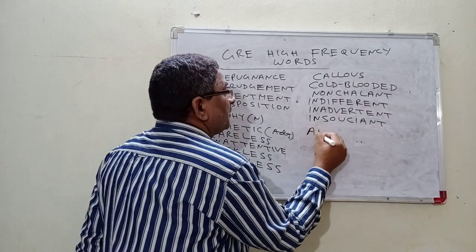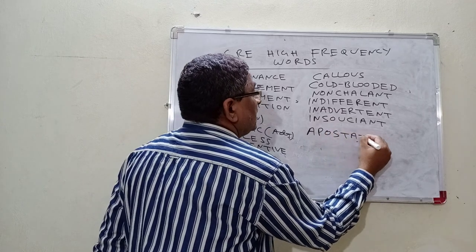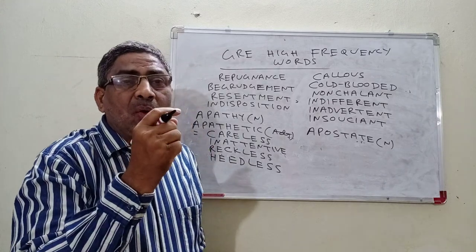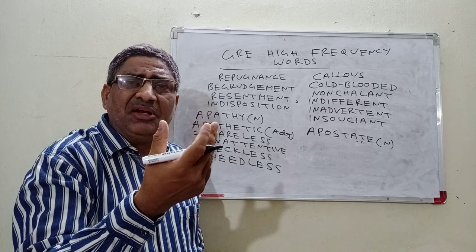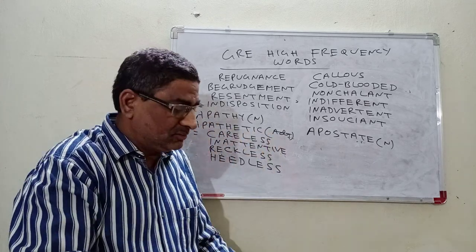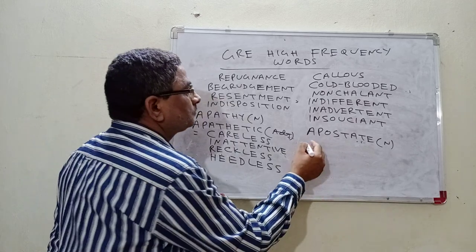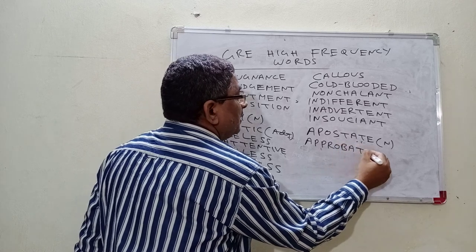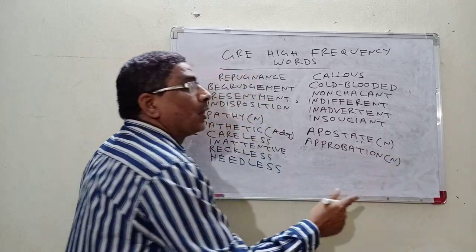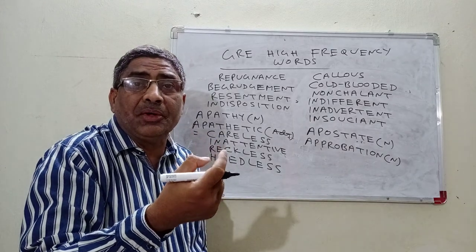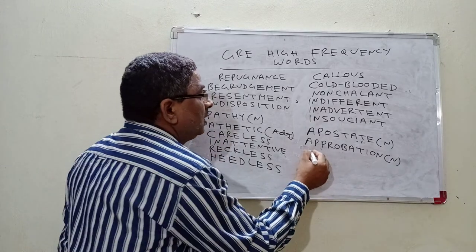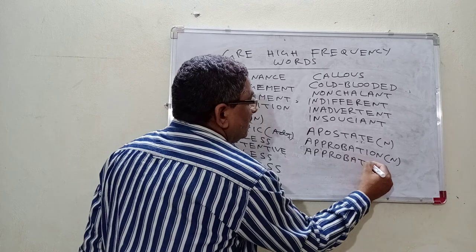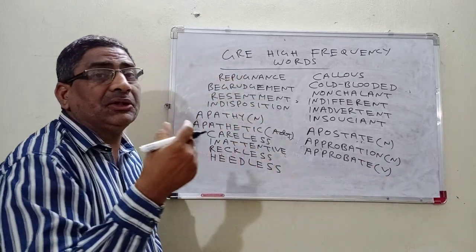Next word: Apostate — this is a noun form. What is the meaning of apostate? One who leaves all his religious and political beliefs — that kind of person is called an apostate. Next word: Approbation — meaning is approval; you would like to show your approval. Approbation is a noun.